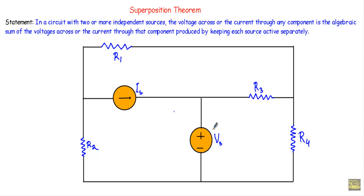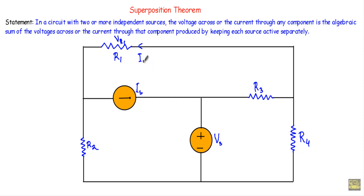Let me describe this statement using this circuit. In the circuit we have an independent current source Is and an independent voltage source Vs. Let's say I am asked to calculate the voltage drop across R1, which I will denote as Vr1, and the current through R1, which I will denote as I1, using Superposition Theorem.